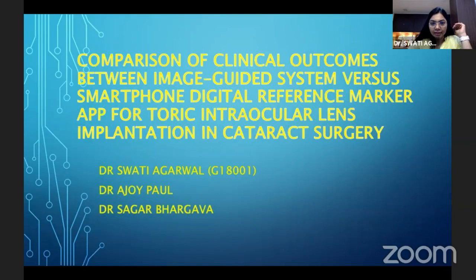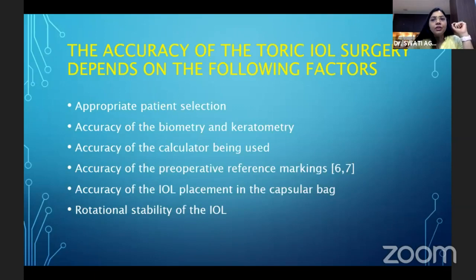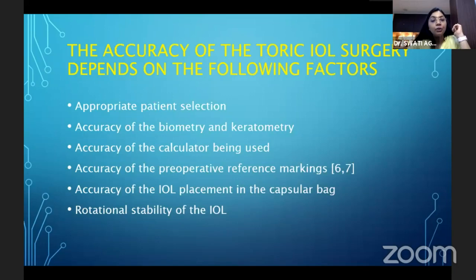There are no financial disclosures. The accuracy of the toric IOL depends on the following factors: appropriate patient selection, accuracy of the biometry and keratometry, the calculator being used, the accuracy of the pre-operative reference markings, the IOL placement in the capsular bag, and the rotational stability of the IOL.